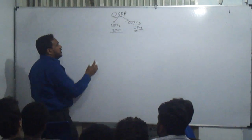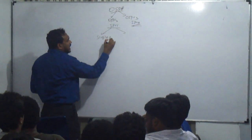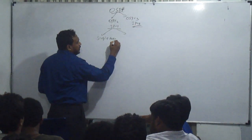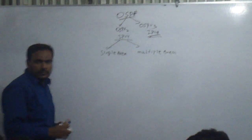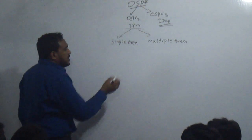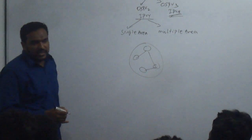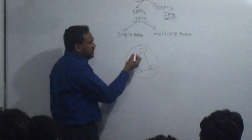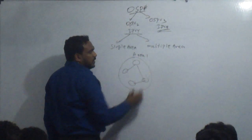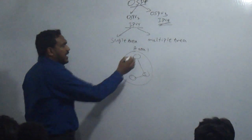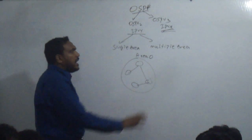OSPF has two types: single area OSPF and multiple area OSPF. In single area OSPF, you have an area where you connect some routers, and you mention just a single area — for example, area 1 or area 0. This can be a single area OSPF.